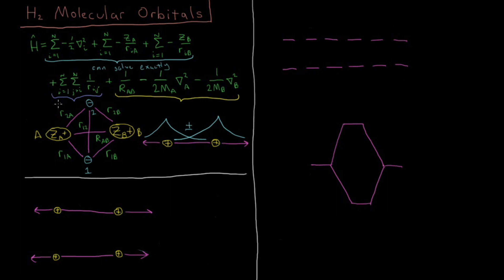The difficulty — the bane of our existence in quantum chemistry — is always the repulsion of electrons from one another, because we can't solve that exactly. We can't separate the i and j indices of the two electrons, so we can't do separation of variables resulting in one-electron functions at a time. This part can't be solved exactly, and that's why we need to do approximations like Hartree-Fock.